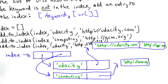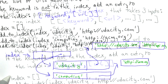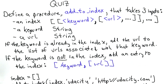So I hope it's clear now what addToIndex should do. I think you know enough to define it yourself. That's the goal for this quiz: define the procedure addToIndex with this behavior. It takes three inputs and adds a new keyword to the index.